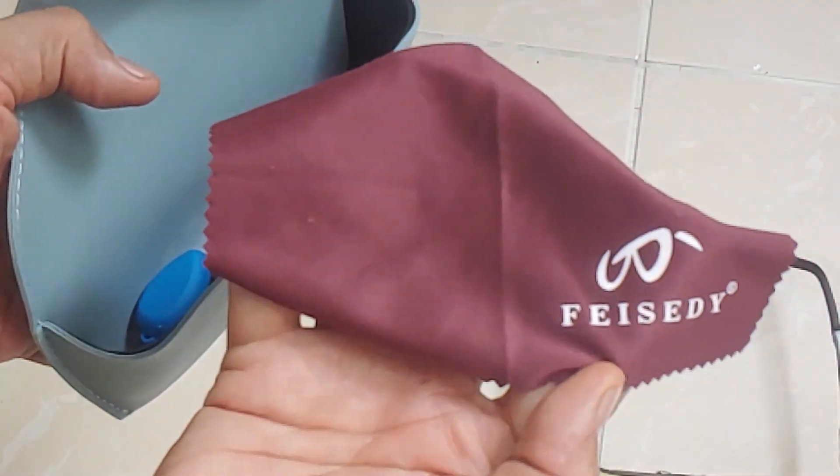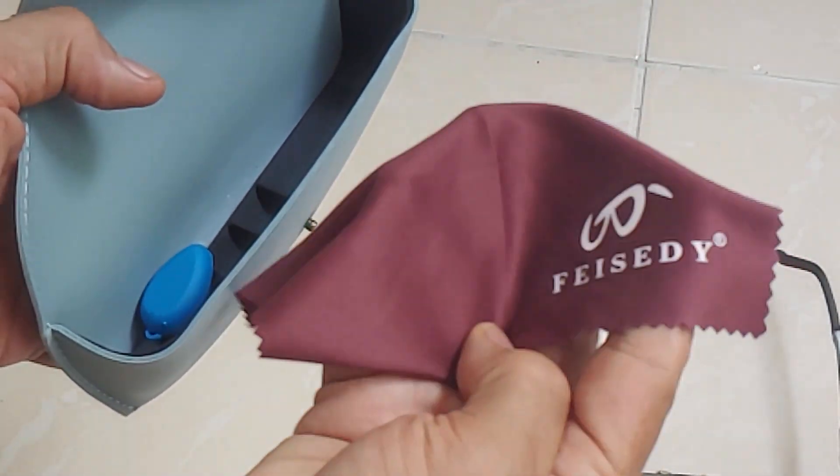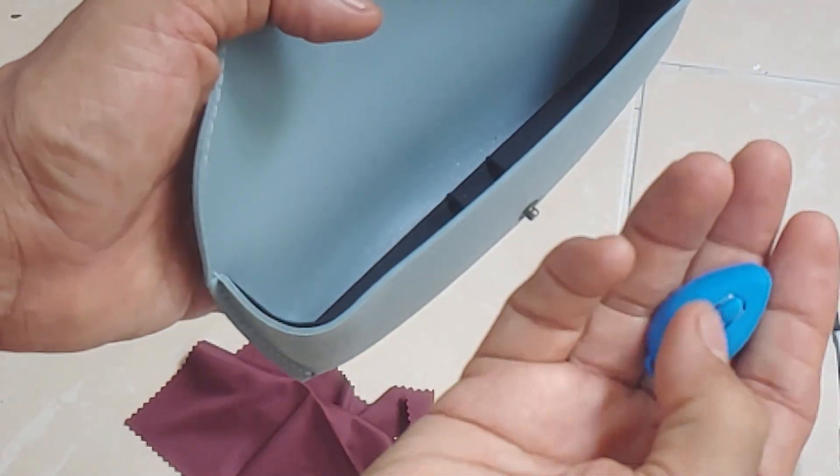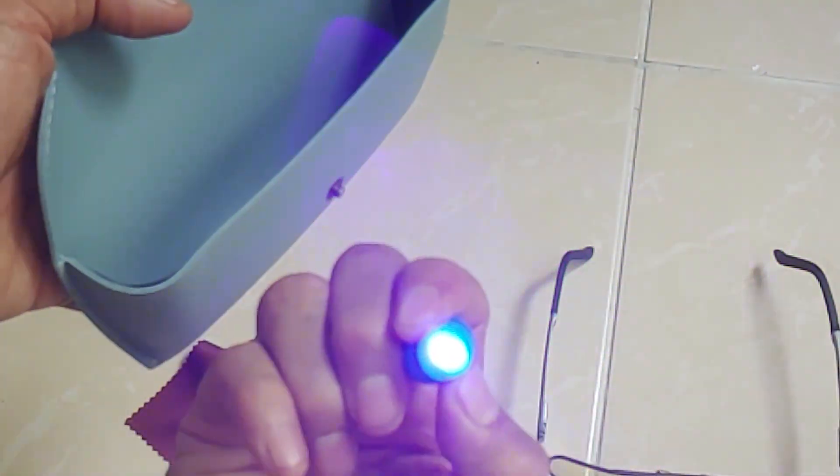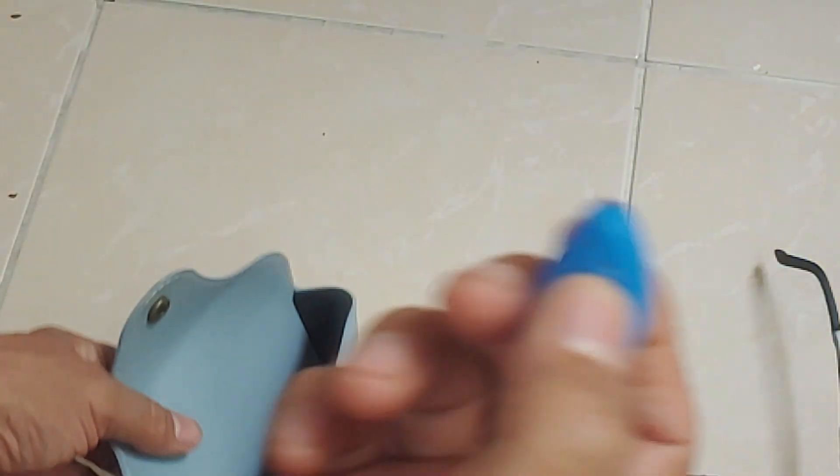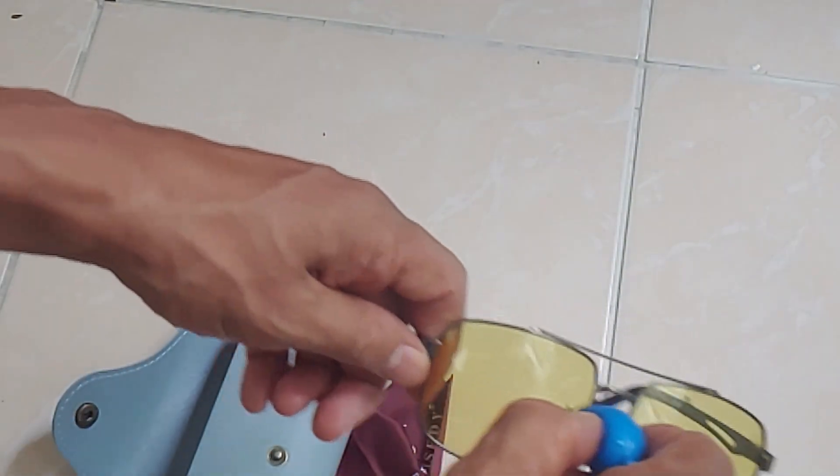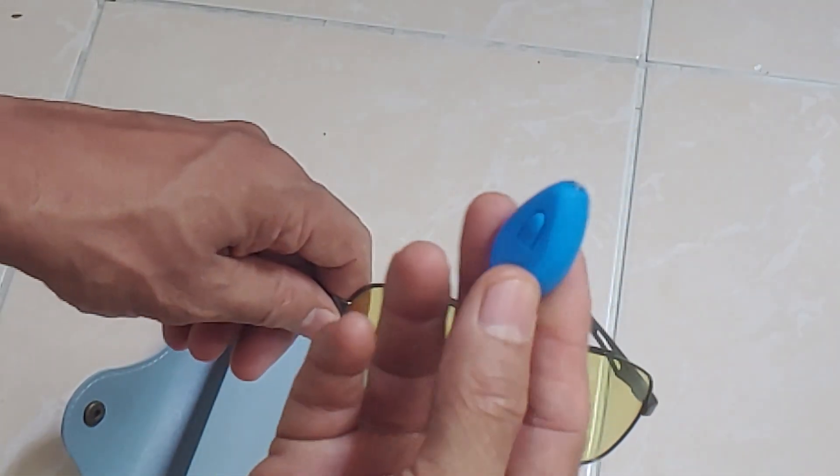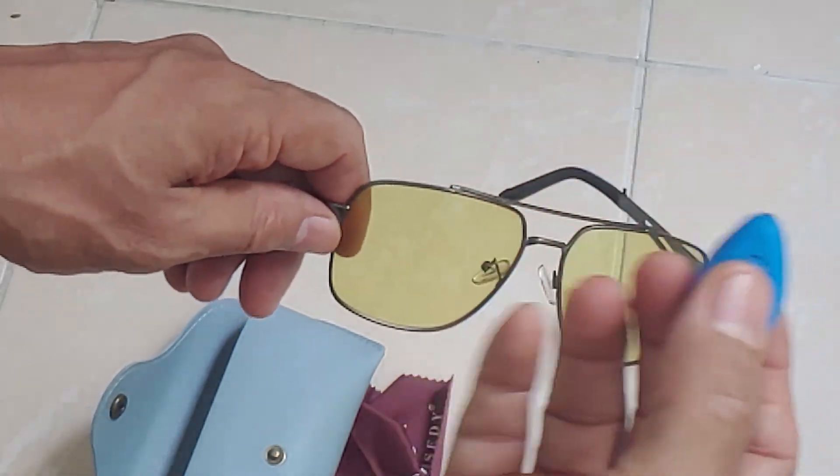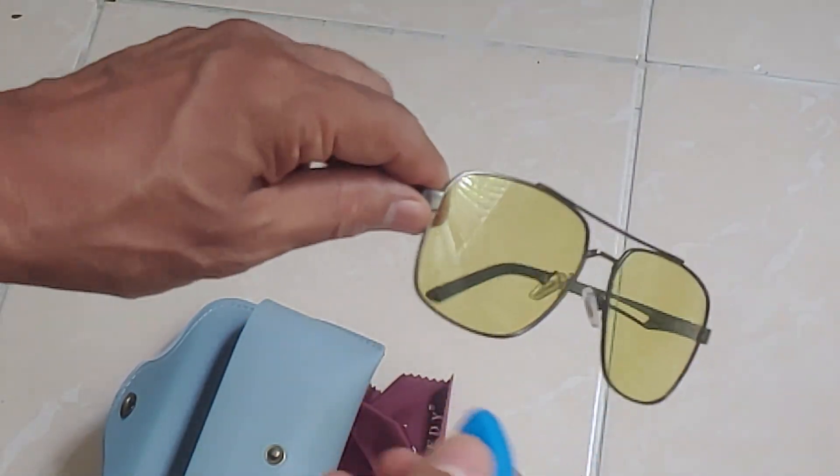UV400 polarized lenses: these glasses feature 100% UV400 protection, keeping your eyes healthy by blocking all UVA, UVB, UVC rays and harmful blue light up to 400 nanometers. They reduce invisible glare from oncoming cars and street lights, softening bright light and enhancing your night vision.